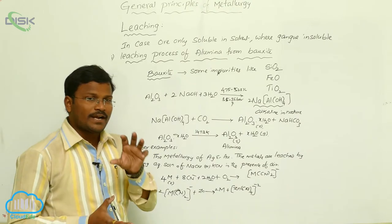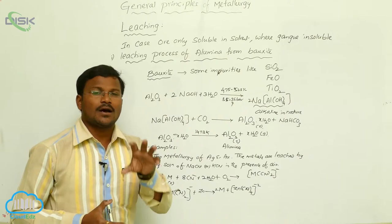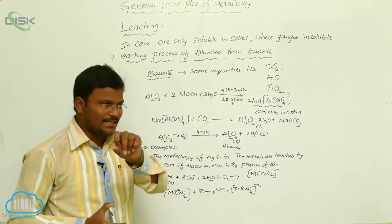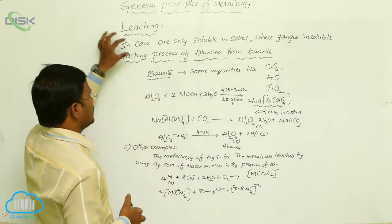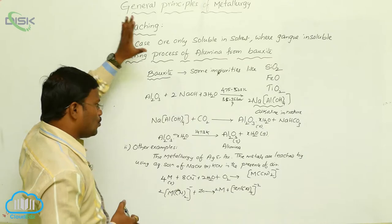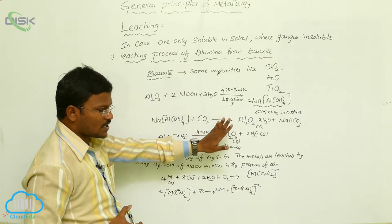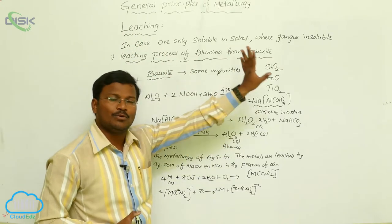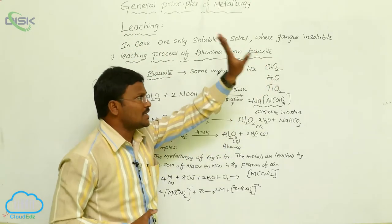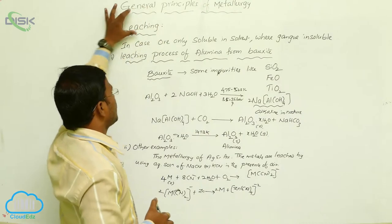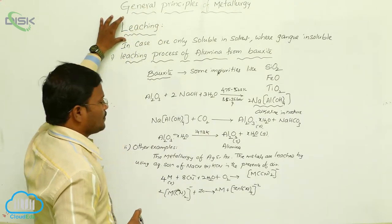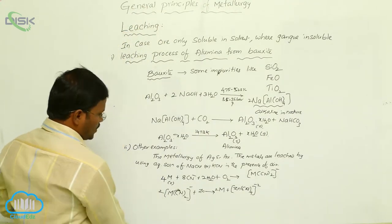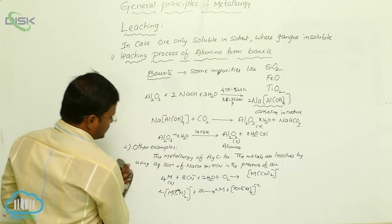This is the most important process called the leaching process. Specified conditions are required to use the leaching process — that is, it is used only when the ore is soluble in the solvent but the gangue is not soluble in the solvent. In such cases, we use the leaching process for the purification of ore.